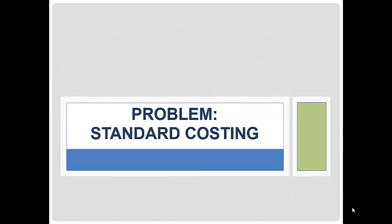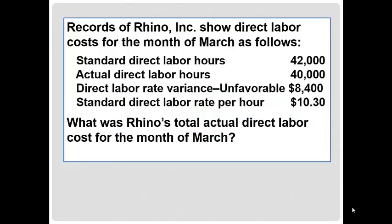Welcome. Let's take a look at one more short problem related to standard costing and variances. Records of Rhino Inc. show direct labor costs for the month of March as follows.